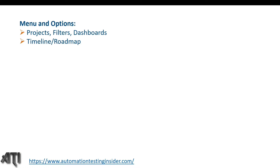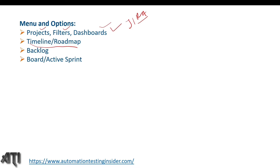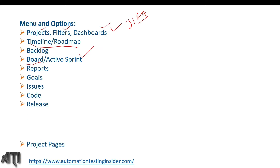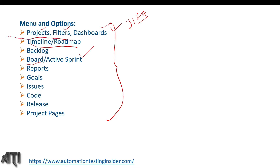At the Jira level we have different menus like Projects, Filters, and Dashboard — we'll talk about them in detail. At the project level we get options like Timeline and Roadmap. Earlier we used to call it Roadmap, but now it shows as Timeline when we create a Scrum project. On the left side we get different options: Backlog, Board, and Active Sprint. Earlier we used to call it Board, but now it shows as Active Sprint. We also have Reports, Goals, Issues, Code, Release, and Project Pages.